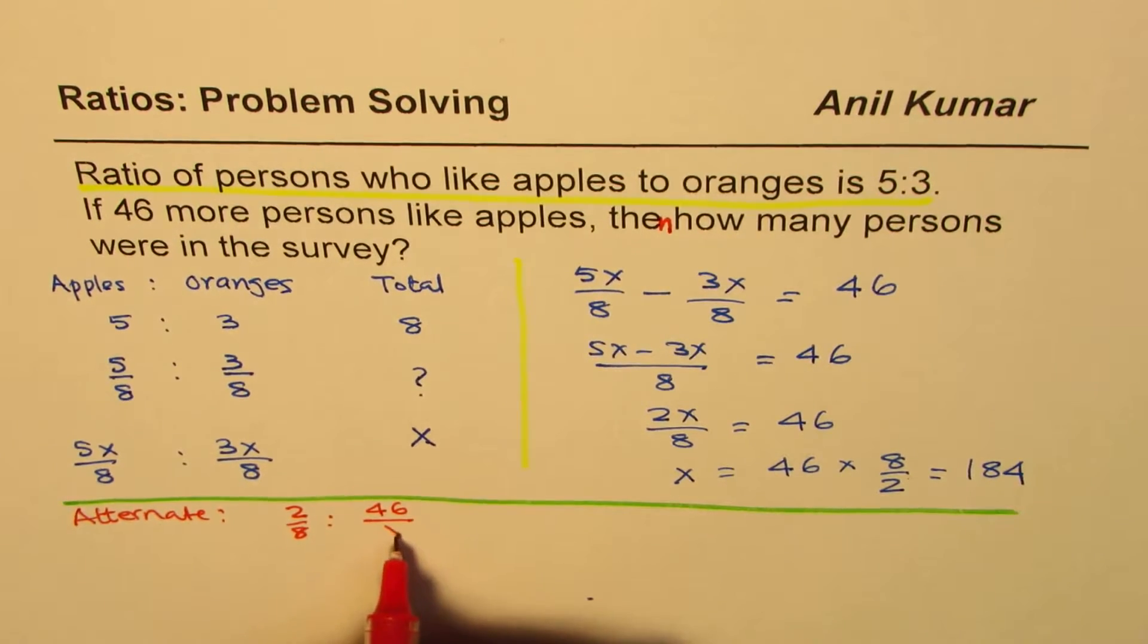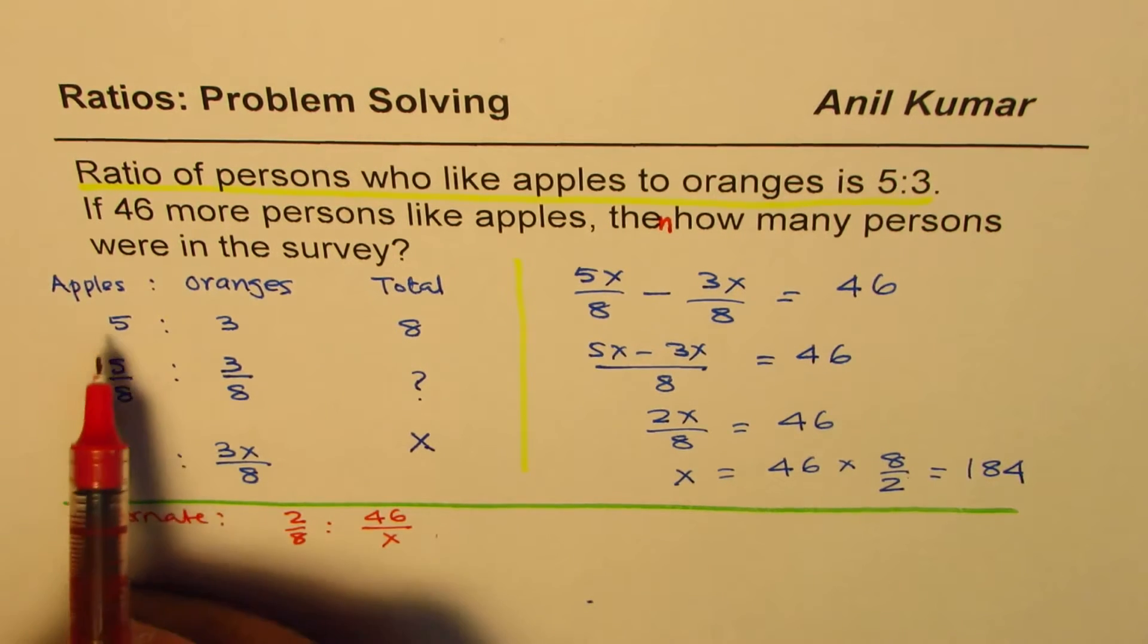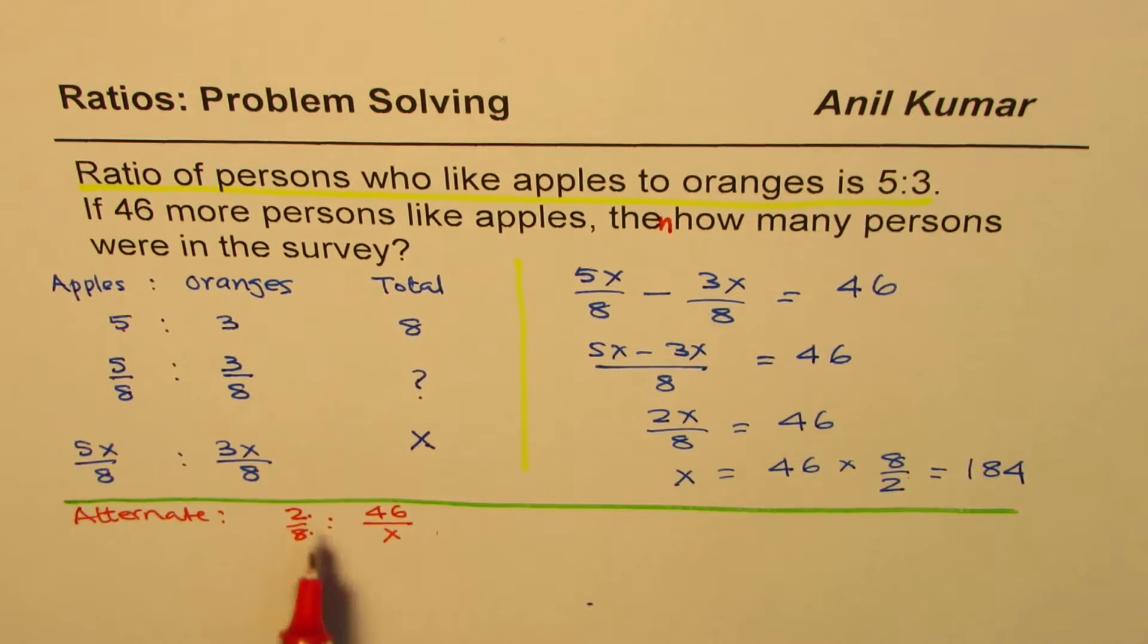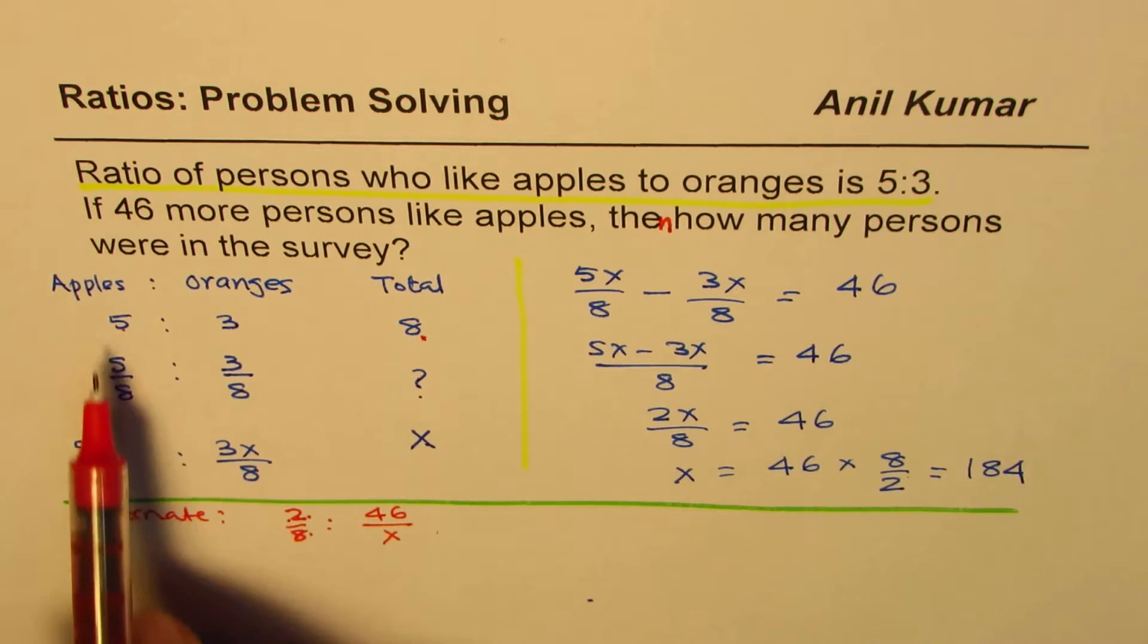46 out of X. So we could treat this as a ratio question itself. So the difference 5 minus 3 is 2, and total is 8. So out of 8, 2 more people like apples. 2 out of 8.